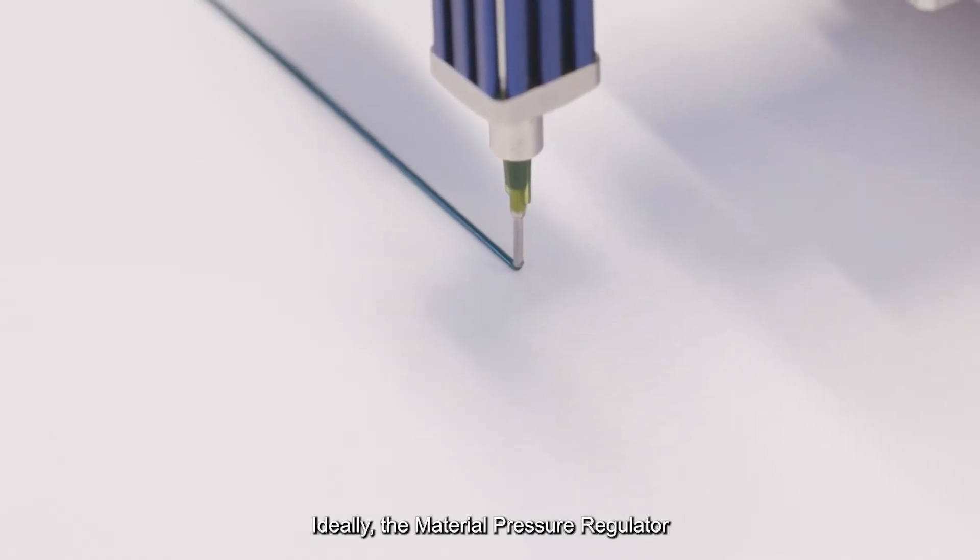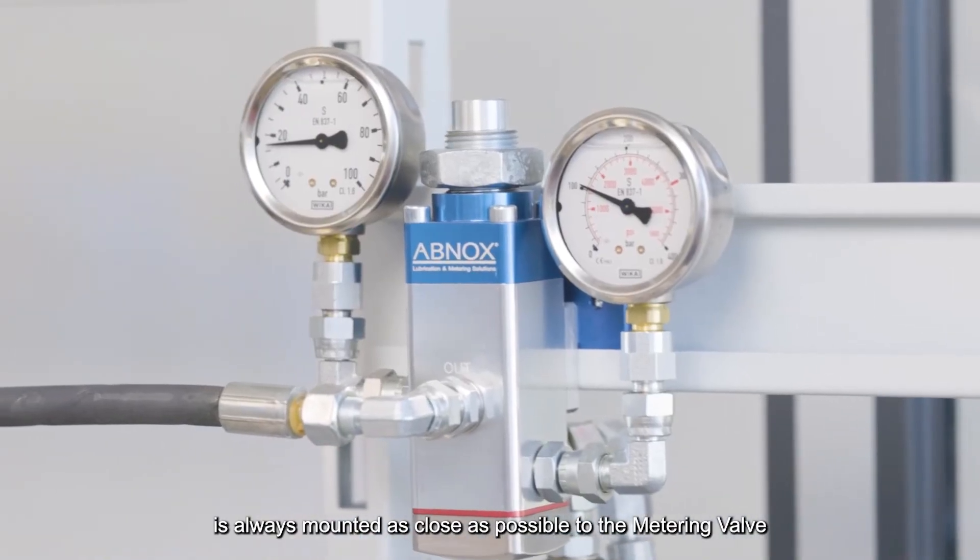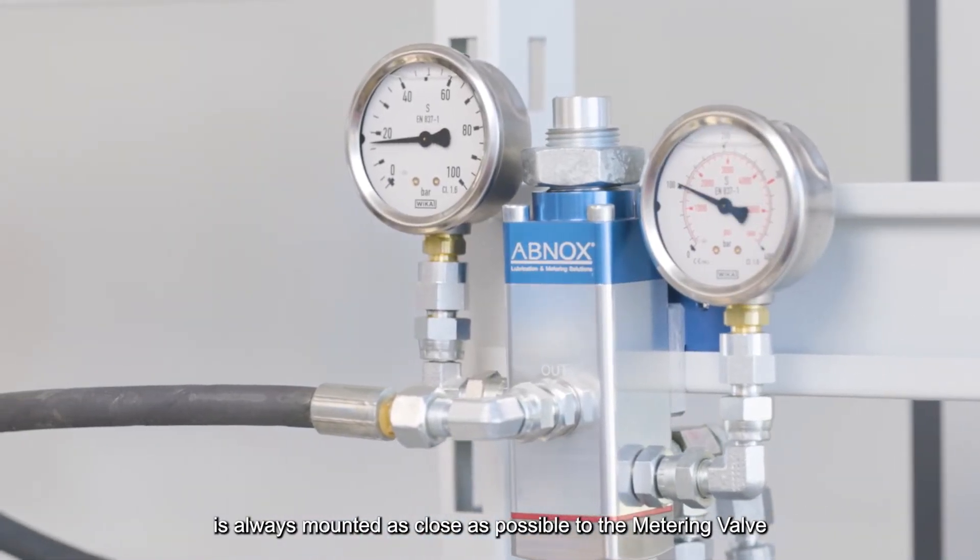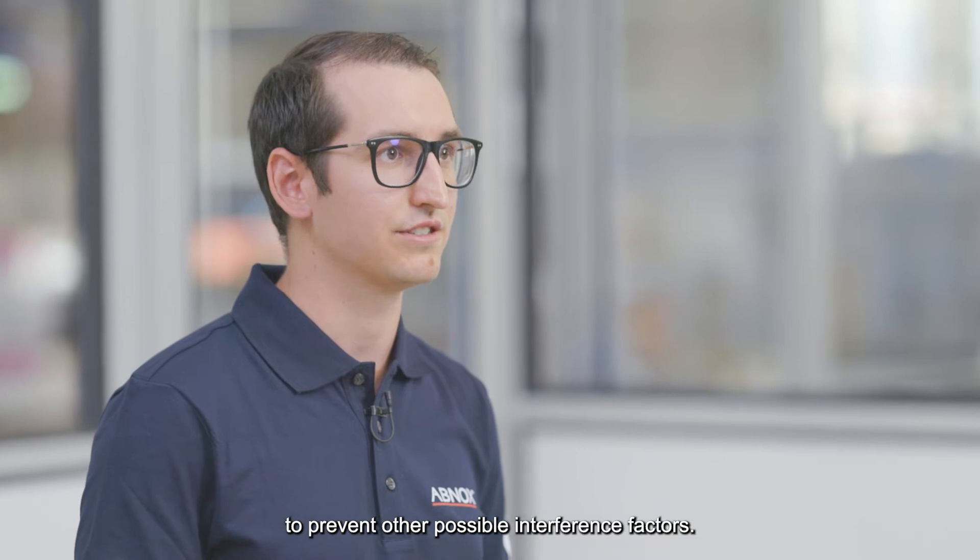Ideally, the material pressure regulator is always mounted as close as possible to the metering valve to prevent other possible interference factors.